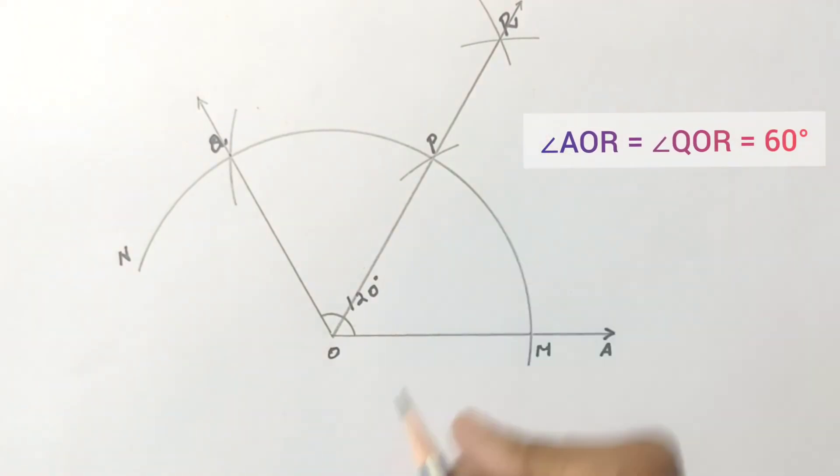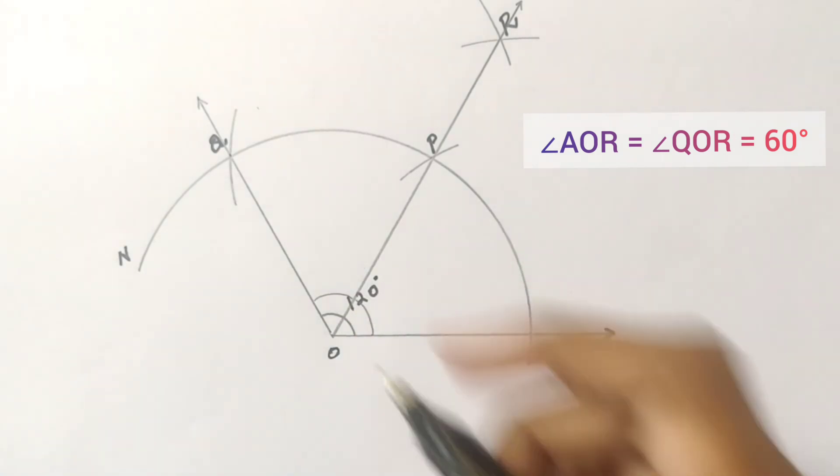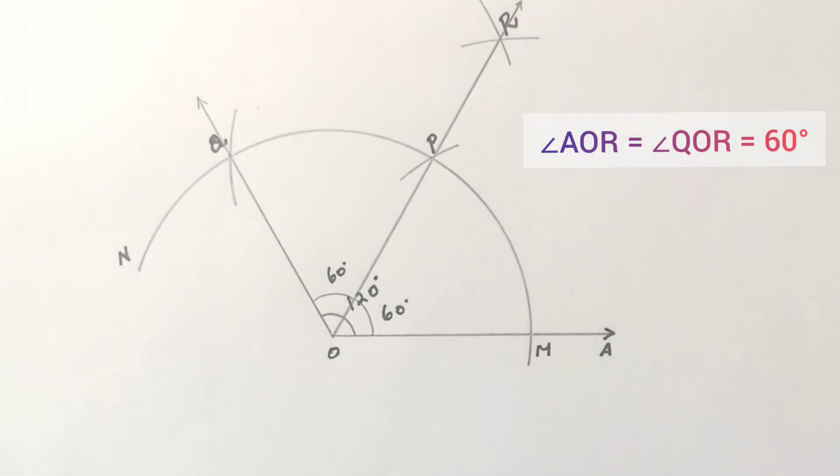Angle AOR is equal to angle QOR, which equals 60 degrees. Therefore, AOQ is the required angle.